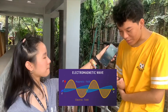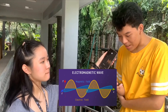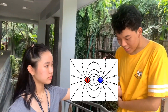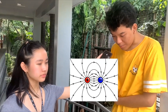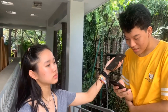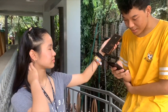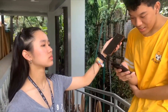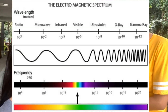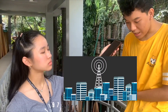Electromagnetic waves are waves that are produced when an electric field comes in contact with a magnetic field. These waves are formed by accelerating charged particles from an electric field in a magnetic field. There are many electromagnetic waves with various wavelengths and frequencies, all arranged in a chart called the electromagnetic spectrum.